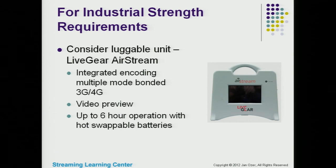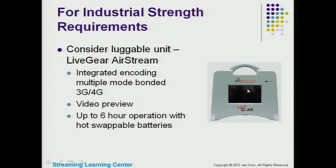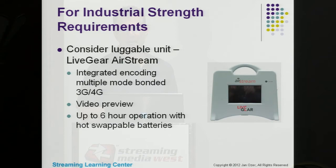Moving into specialized hardware: if you really need industrial strength remote broadcasting, consider the Live Gear Airstream — integrated encoding with multiple mode bonded 3G and 4G. The integrated encoding can change the bit stream if throughput drops. It also provides video preview, which is nicer than just a red button saying you're streaming. The unit gives up to 6-hour operation with hot-swappable batteries, making it a strong choice for off-site events with no power.